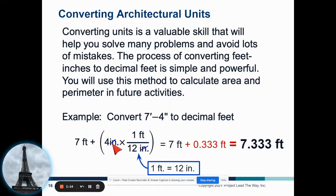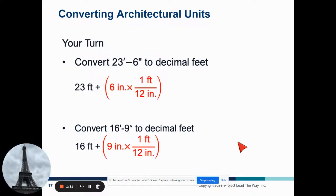So if I do 4 over 12, it would equal the decimal of 0.3333 feet. So 4 feet 4 inches is equal to 7.3333 decimal feet.